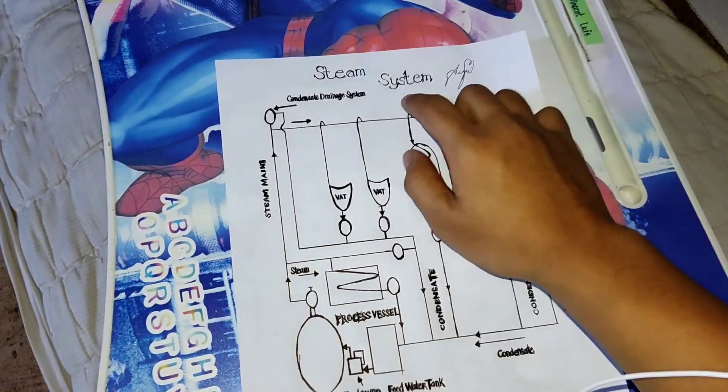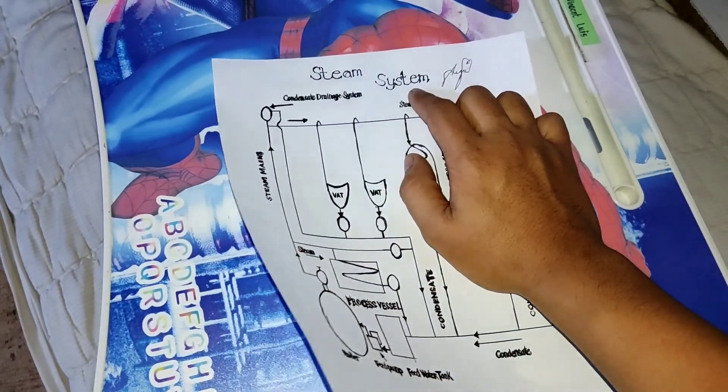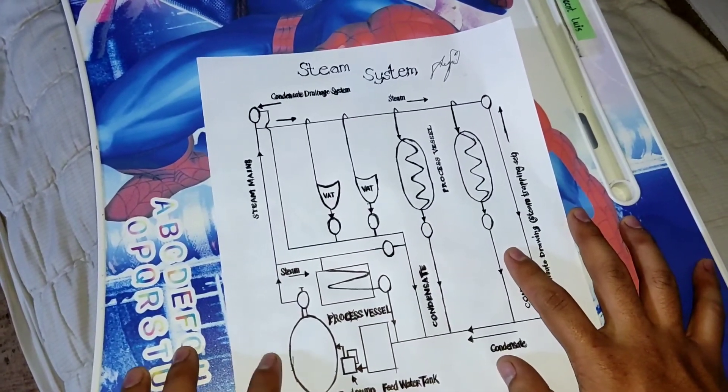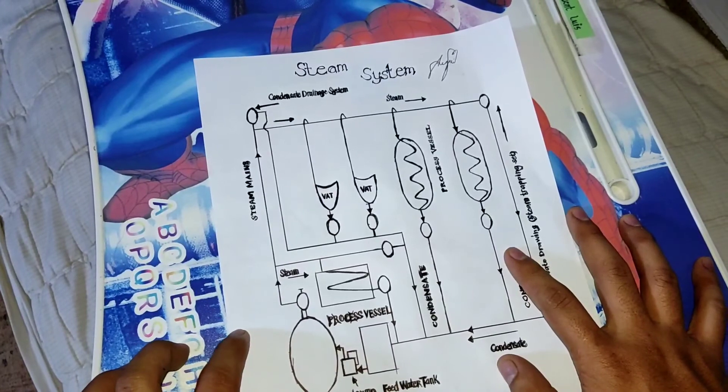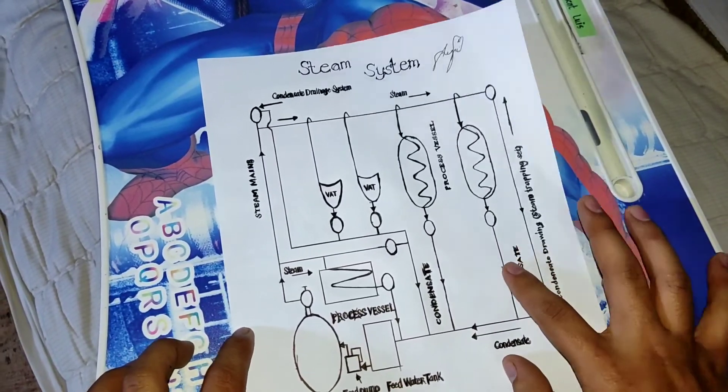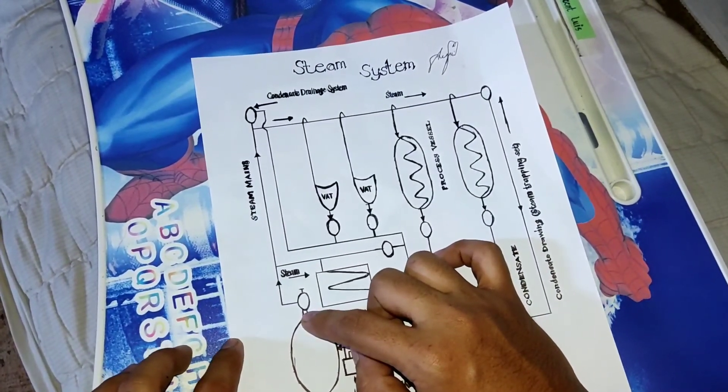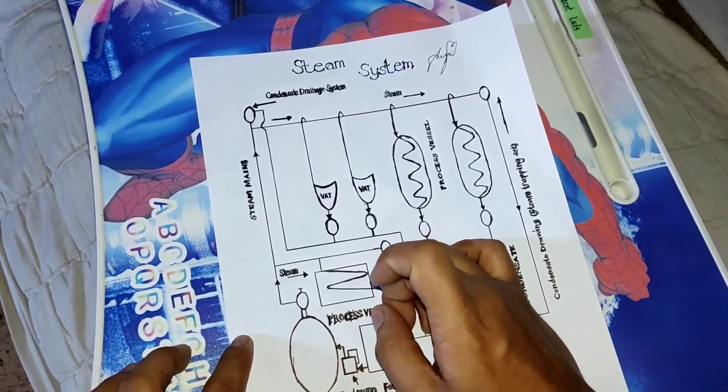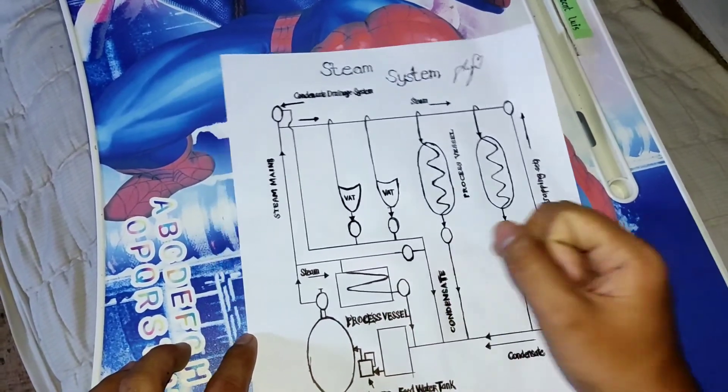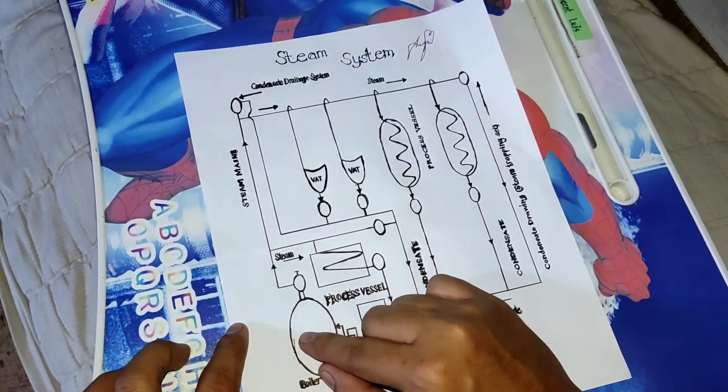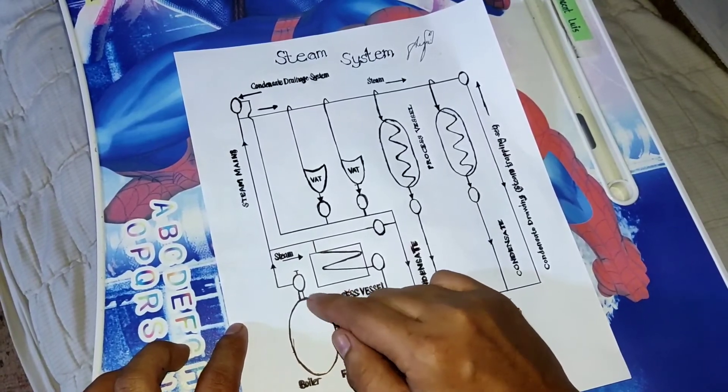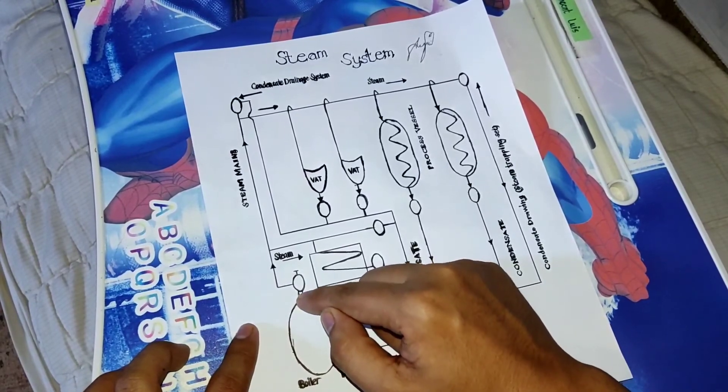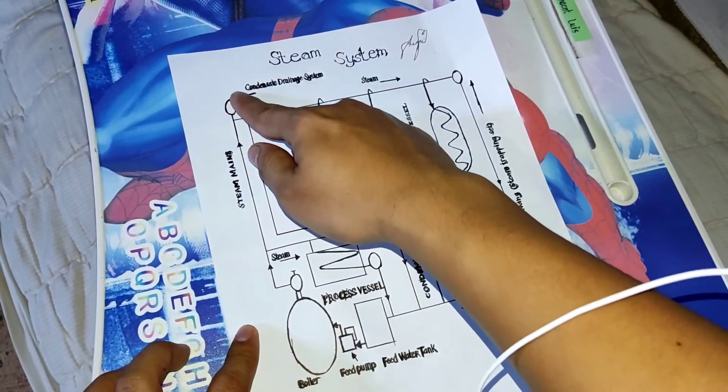We have here the steam system diagram. I already discussed how the boiler generates steam and its process or the flow of steam into the steam services or the consumers and back to the condenser and return to the feed water tank. Here, we have the boiler. After the boiler generates steam, the steam generated will proceed to the steam main line.